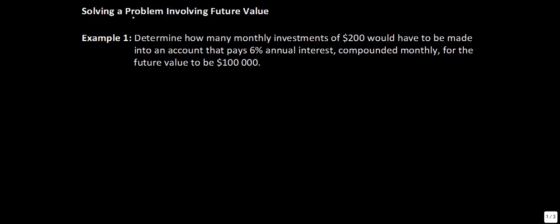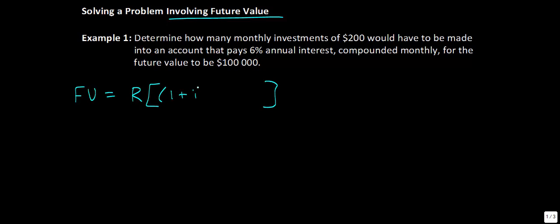The first type of question we're going to do is solving a problem involving future value. The equation we have is FV, meaning future value, is equal to R — my regular investment — all multiplied by brackets: 1 plus i, where i is the interest rate per compounding period, all raised to the power of n minus 1, all divided by i. And n is the number of investments.